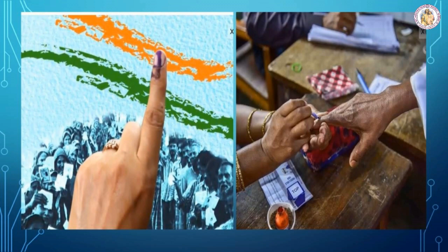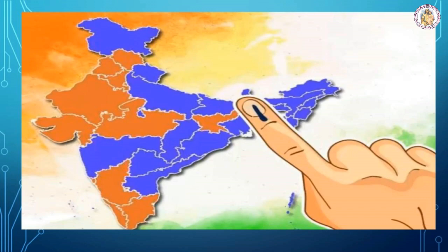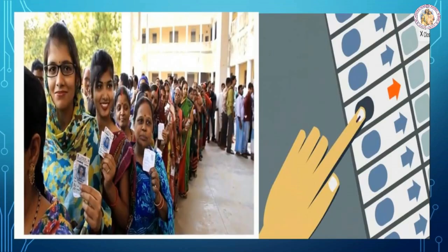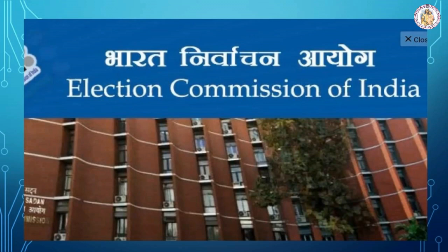MLAs are not appointed — they are elected by the people through general elections. Political parties play a vital role in elections. For elections, the entire state is divided into several constituencies on the basis of population. Political parties nominate their candidates to each constituency. All the people who have completed 18 years of age cast their vote. The candidate who gets the more number of votes is declared as elected and becomes an MLA.